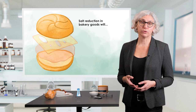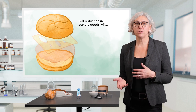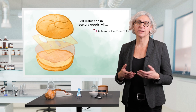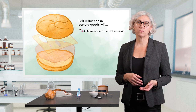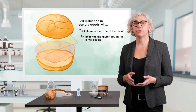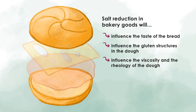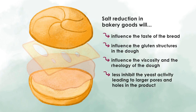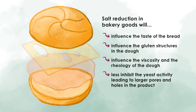Bread is another very important source for dietary salt intake. As with cheese and sausages, a salt reduction does not only impact sensory properties but also has consequences for production. The addition of salt to dough influences the development of gluten structures, which are responsible for the viscosity, rheology, and water binding capacities of the dough. Salt also regulates yeast activity during fermentation — lower salt concentration will less inhibit yeast activity, leading to increased gas release and larger pores and holes in the final product. The water activity is also affected by salt content, and a lower salt concentration leads to higher water activity and a shorter shelf life.